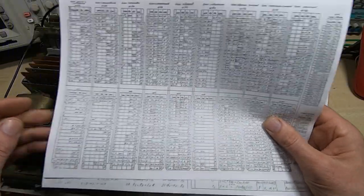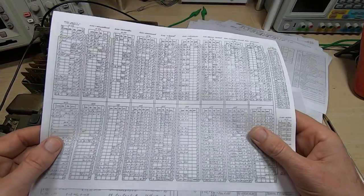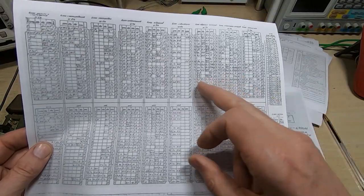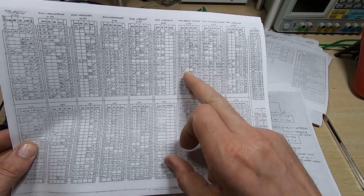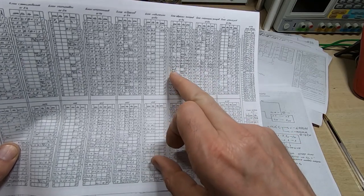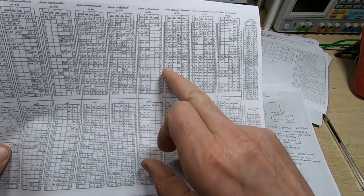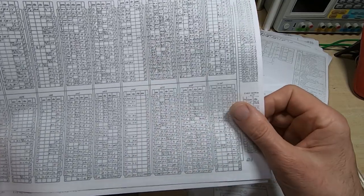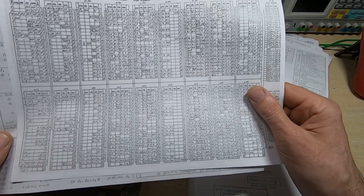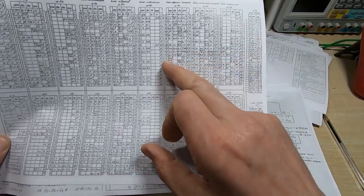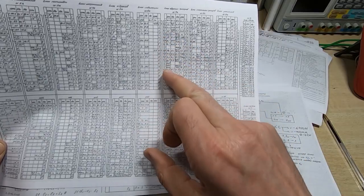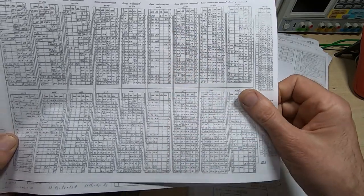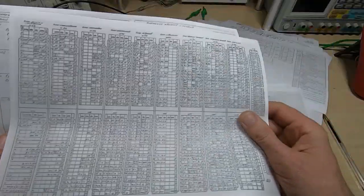I believe this is a signal designator chart. Again it's in Russian so I can't read it but I think this says what each signal actually is. Then we have the interconnect information for the backplane. Although I can't read this what I can do is match them up.